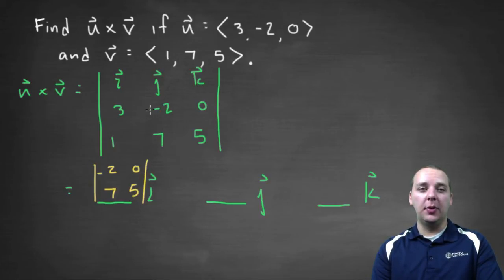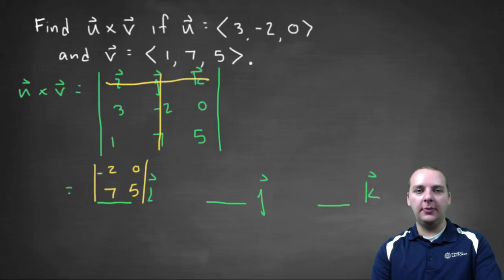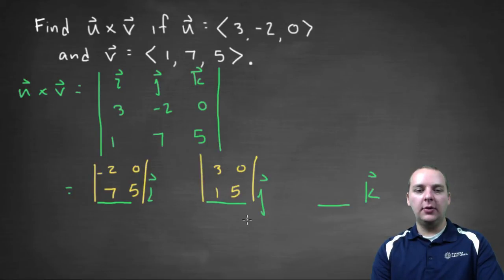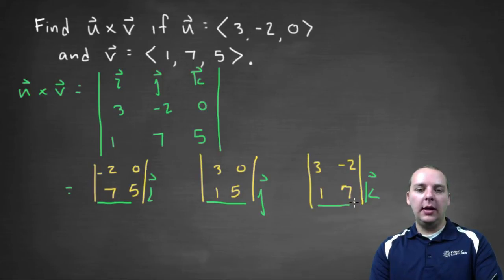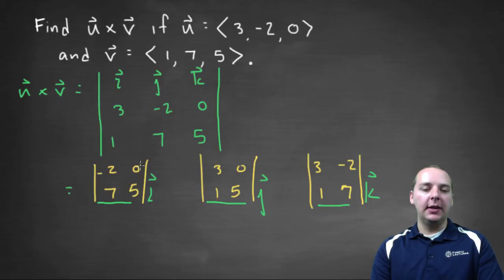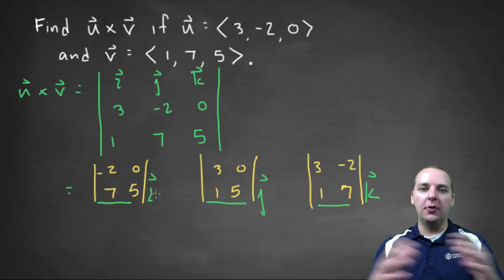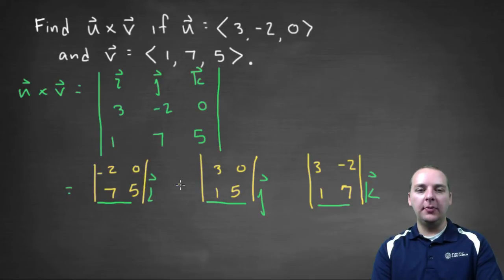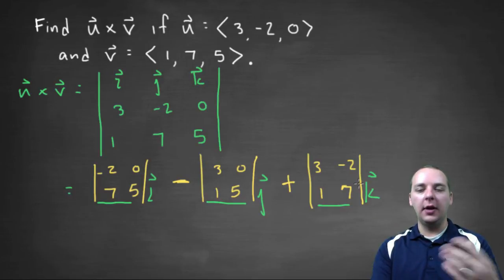You do the same thing for the j and k components. For j, delete the row and column j is in — you're left with 3, 0, 1, 5, and you take that determinant. For the k component, you'd have 3, negative 2, 1, 7. You'll also remember from 3 by 3 determinants that there's an alternation of sign — plus, minus, plus — for these cofactor expansions. So the i term keeps its sign, j gets a minus, and k gets a plus.